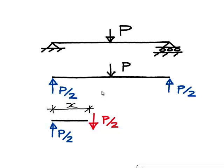Look carefully at that free body — it's going to spin in a clockwise direction, and therefore we know that at the cut there must be a moment acting which will spin that free body back in an anti-clockwise direction. We'll call that moment M, and in fact that is a bending moment at that cut.